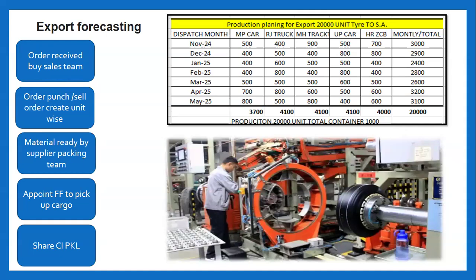We then share the planning information with the appointed freight forwarder — for example, that we need 10 containers from the Rajasthan factory to Brazil, along with the volume, type of container, factory location, and destination. Based on these details, the freight forwarder will book containers from the shipping line, and the containers need to report at the factory as per the given time and date. This is the production planning process for 20,000 tires from different units across India for the South America order.